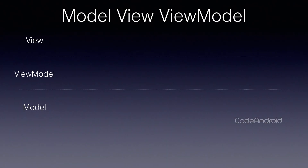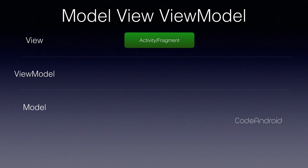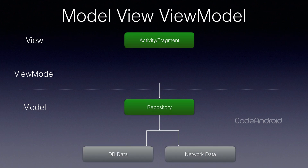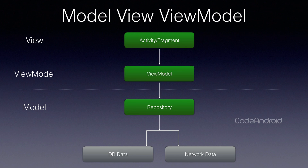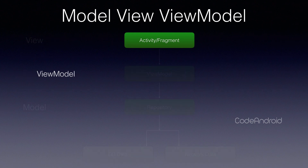In MVVM, View contains the code which accesses the UI components — for example, Activity or Fragment. Model contains the business logic like calculation and network communication. Finally, the ViewModel is a bridge between View and Model.